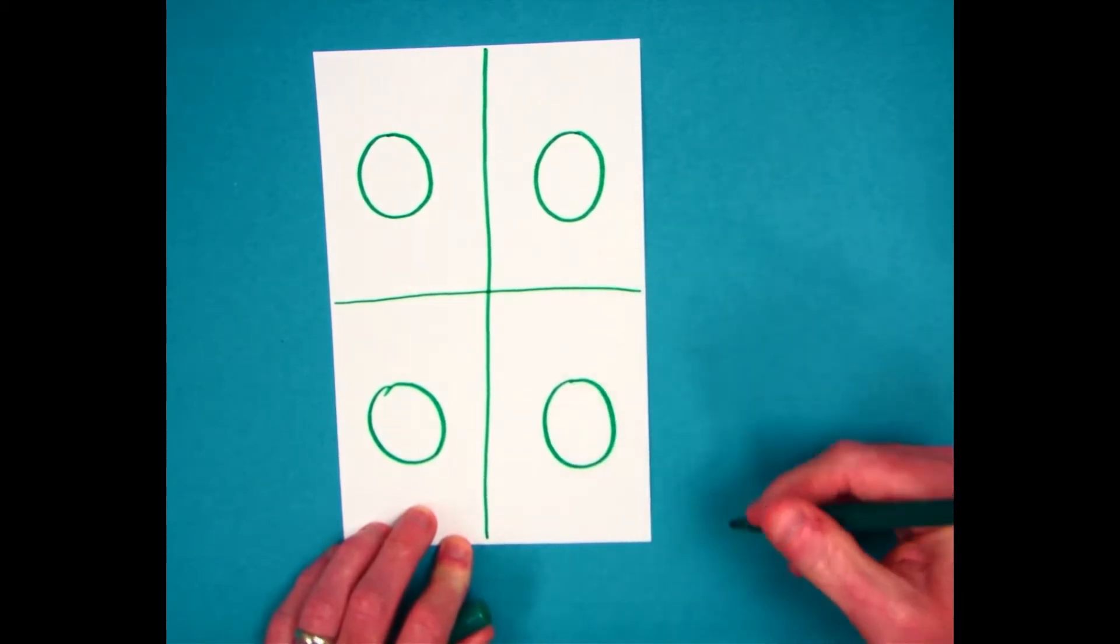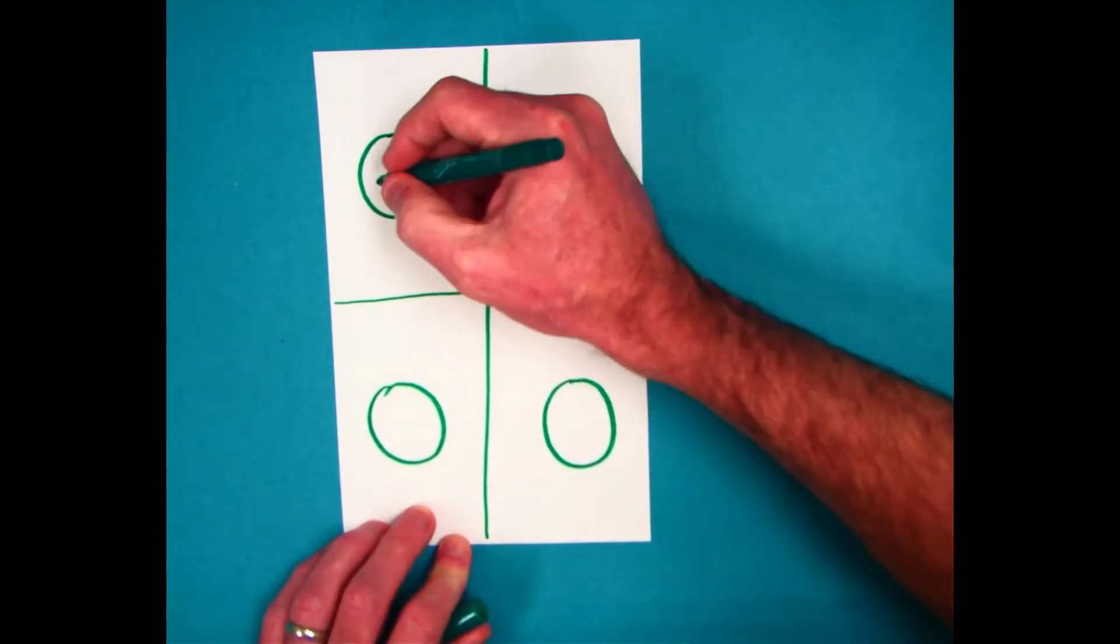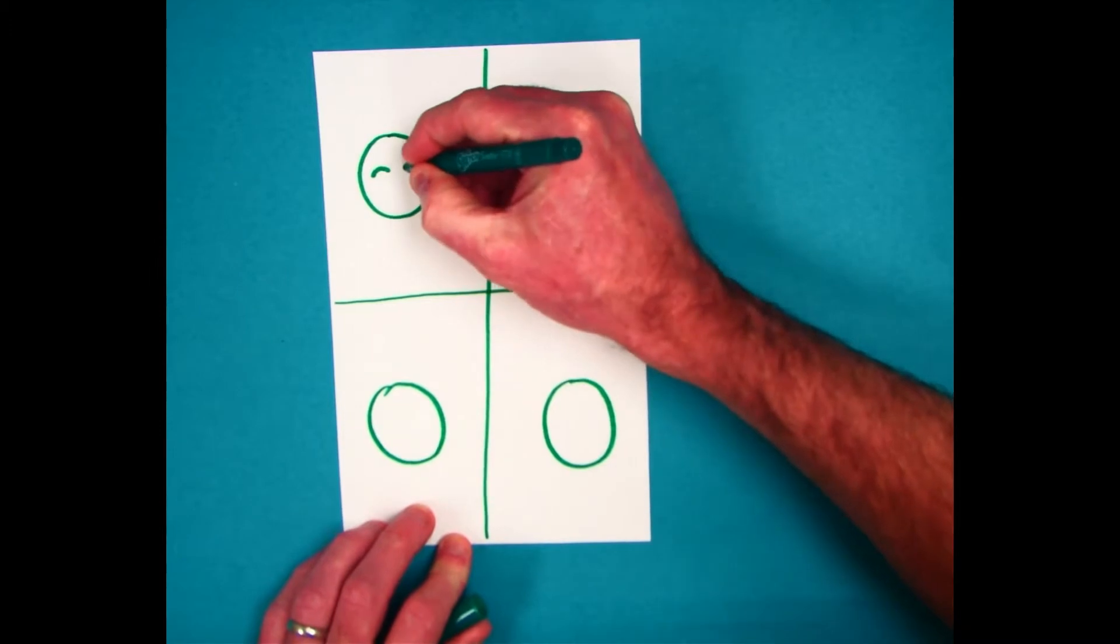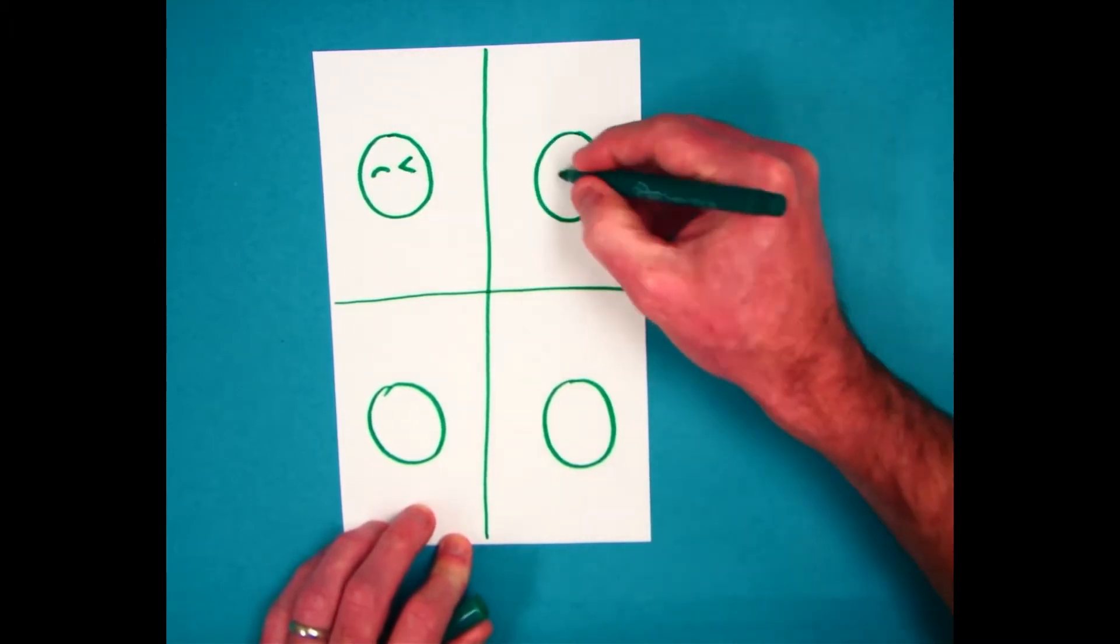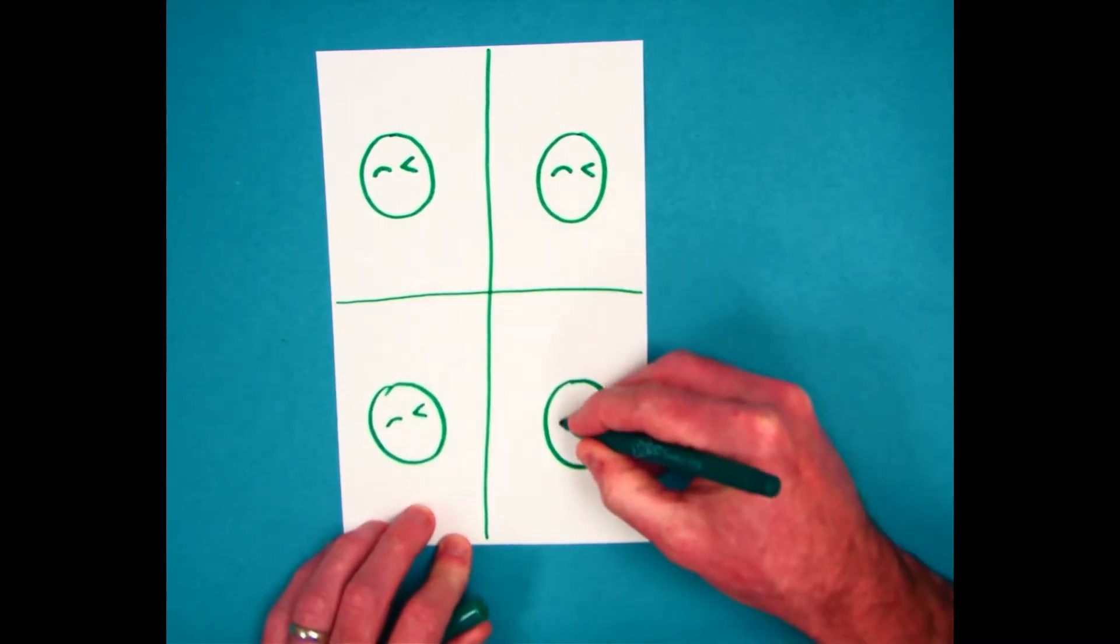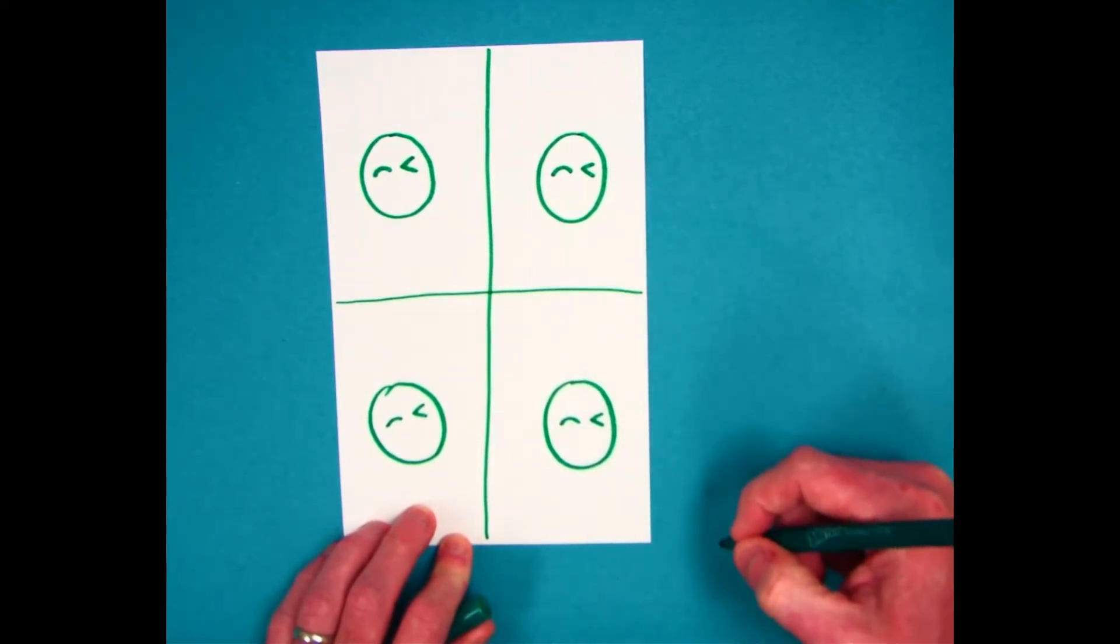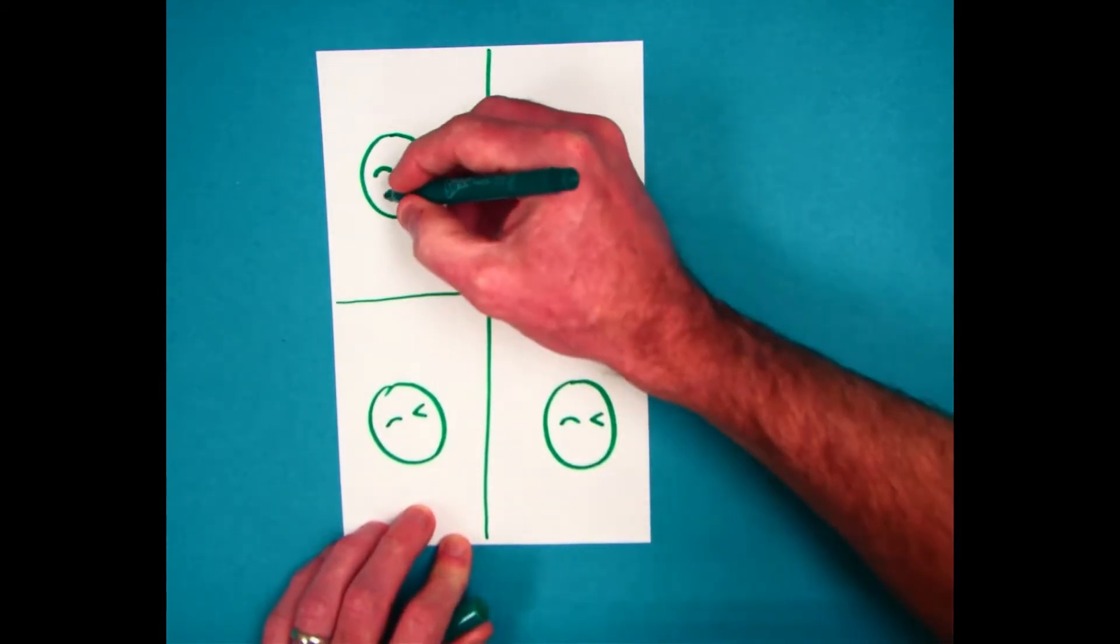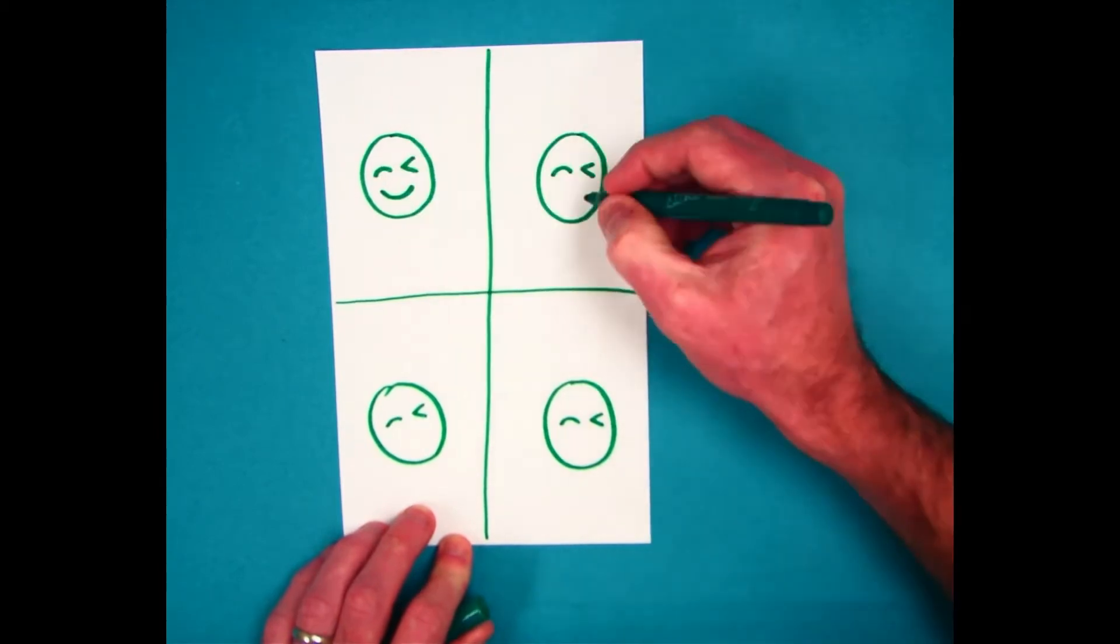After you have your shapes, then it's time to add details. I'm going to make this one a cute emoji. So maybe I'd do different emojis for each one, each face. But for this, since it's a how-to, you guys can decide what you want yours to look like.